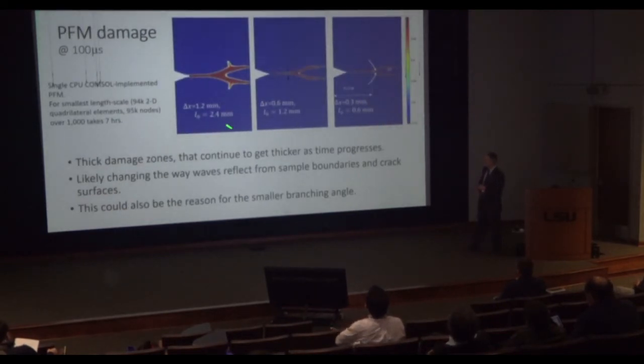And then phase field, there's a length scale in phase field, this L0 quantity. And if you refine that as well, along with the discretization, you get finer features. But all of them show something interesting as well. This thickening of damage past the crack traveling by a location. So as the crack advances and it passes, there's continuous movement of damage expansion into the material. And that's not really what you see in glass. So you see this what we could call as a bleeding of damage.